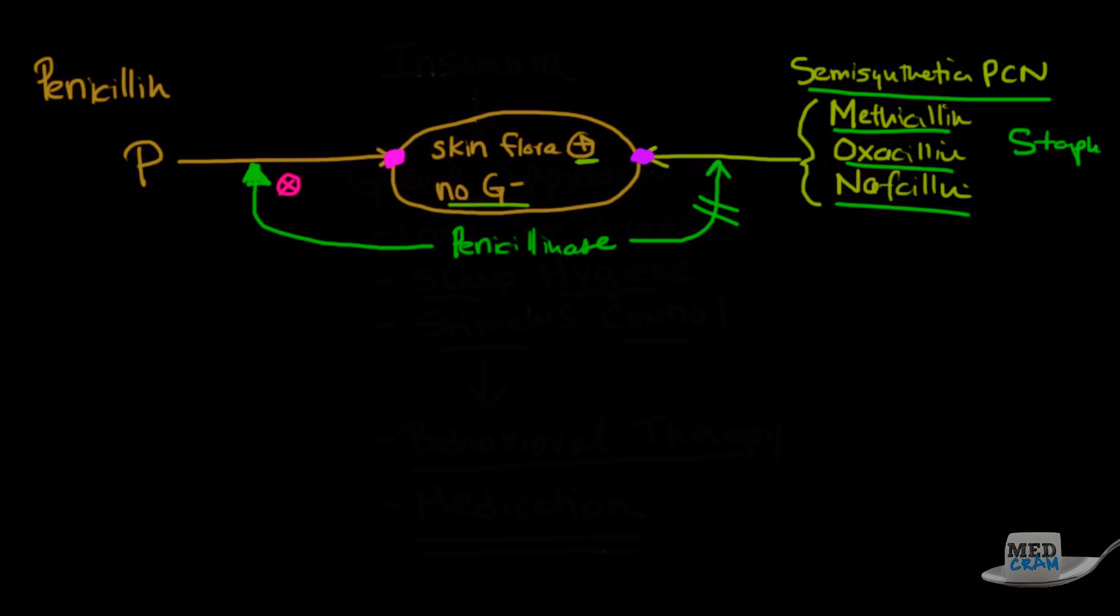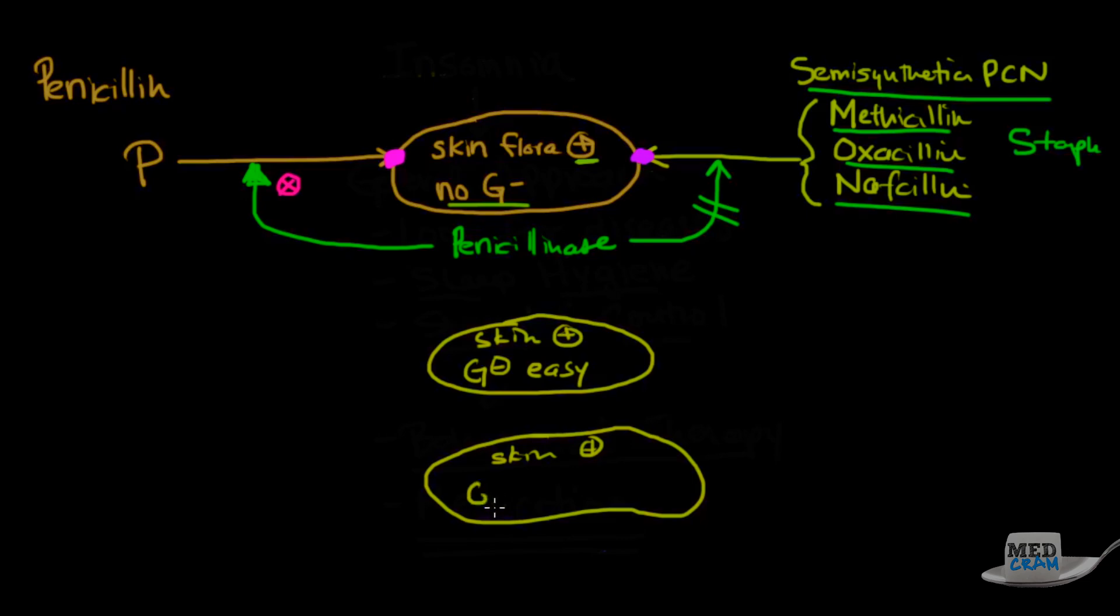And so a couple of things happened. They came up with different types of penicillins that would cover that. And so there's really two types of bacteria afterwards that were looked at. The skin flora was still something that needed to be covered, gram positive. And then there were the easy gram negatives, like the E. coli's in the urine and stool. And then there were the gram negative hards, these resistant gram negatives like pseudomonas.